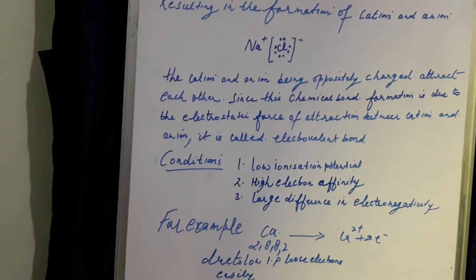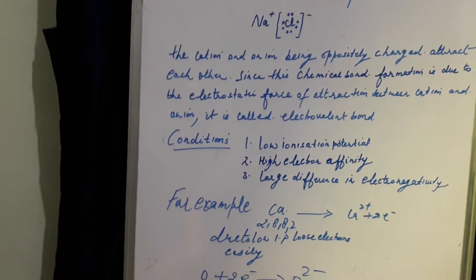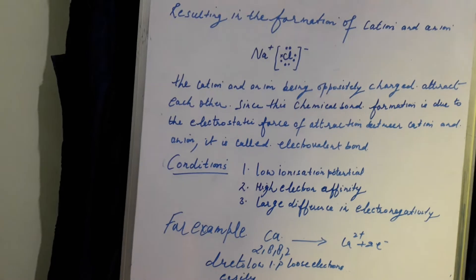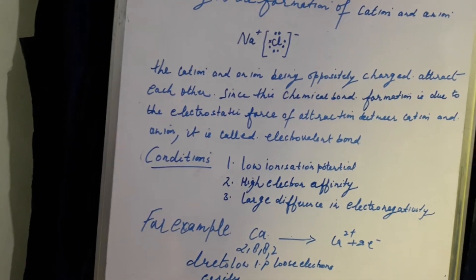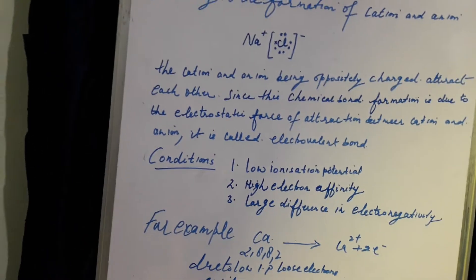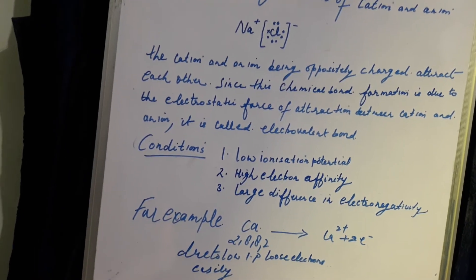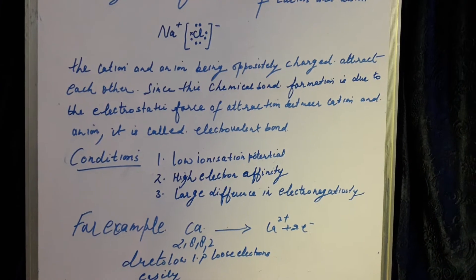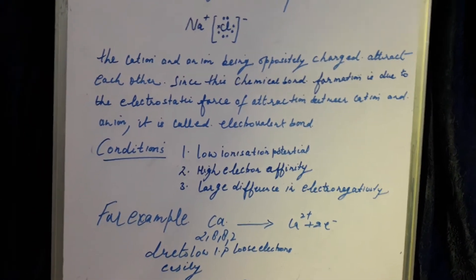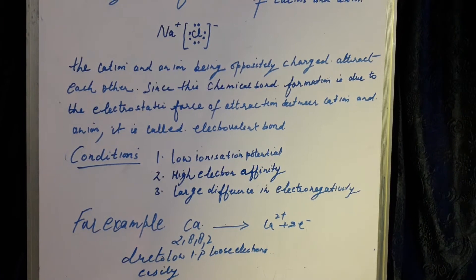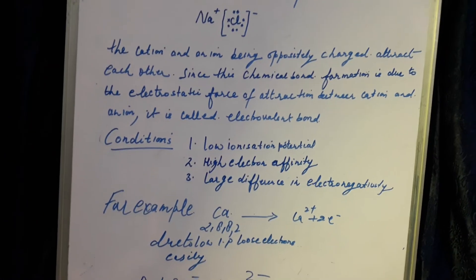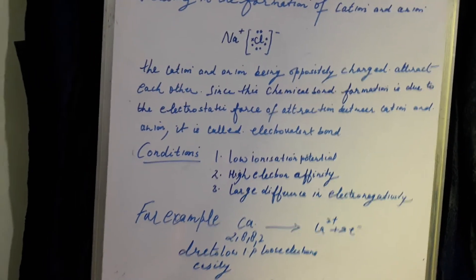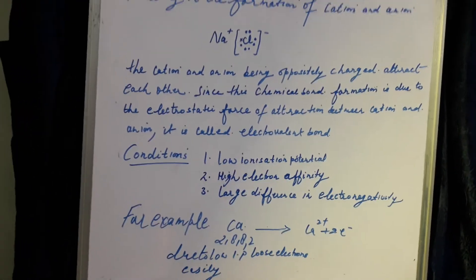Non-metals have high electron affinity. The third condition: there should be a large difference in electronegativity. It means one atom should be highly electropositive whereas the other should be highly electronegative. Then only an electrovalent bond will be formed. If there is very little or no difference in electronegativity, it will result in the formation of a covalent bond.